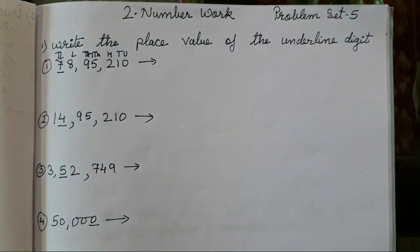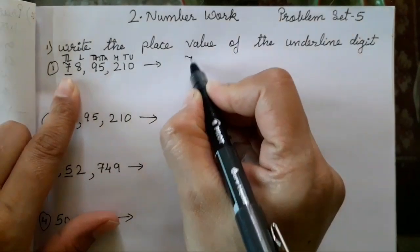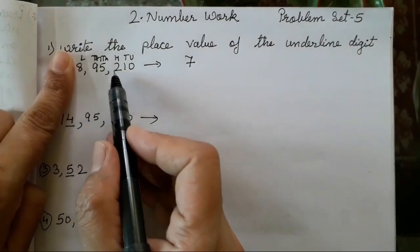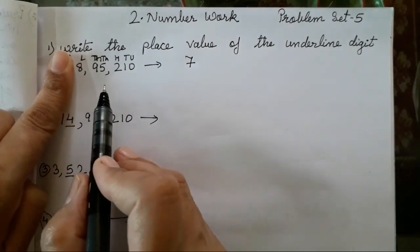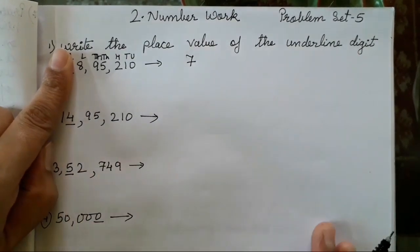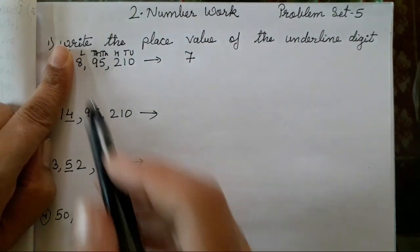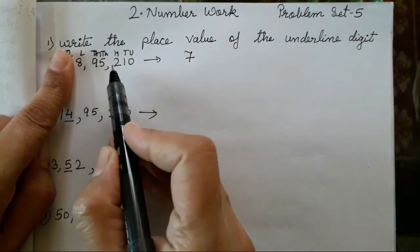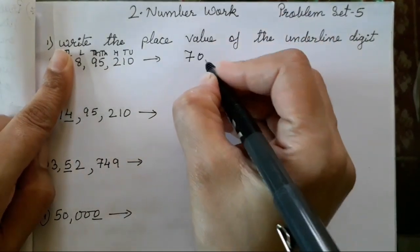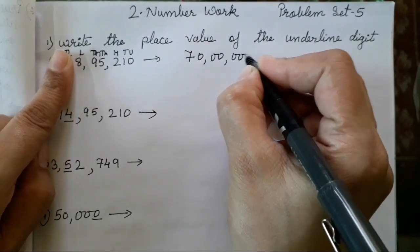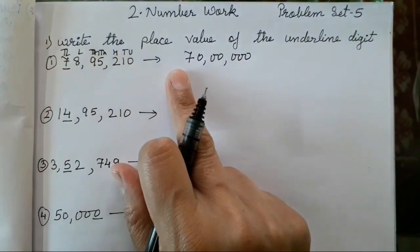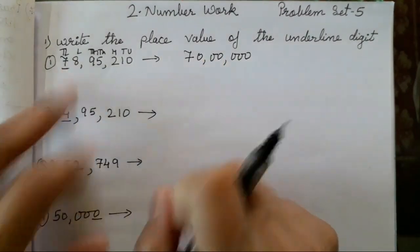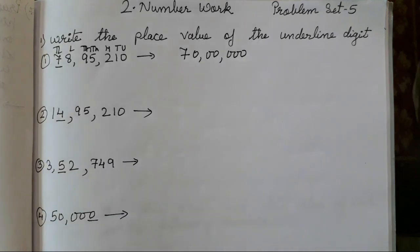So seven is at which place? Ten lakh. Now how are you going to write the place value? It's very easy: first write seven, and after seven the remaining numbers with zeros you have to write. Don't forget about the zeros. Put a finger over the seven and the remaining positions — add that many zeros. Seven is in the ten lakhs place and this is the place value of the digit.